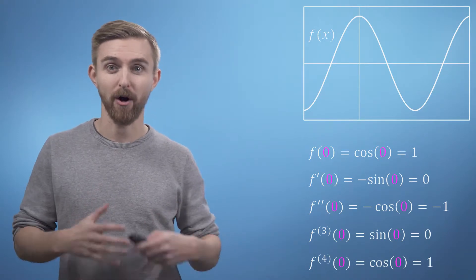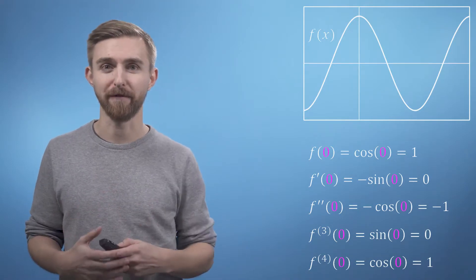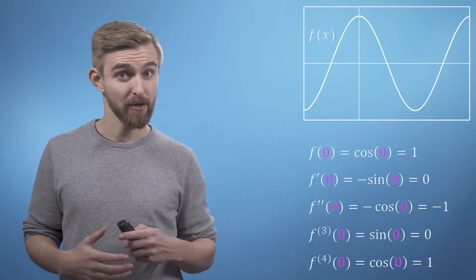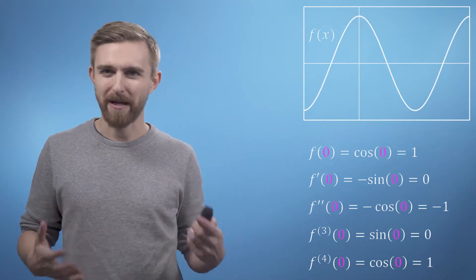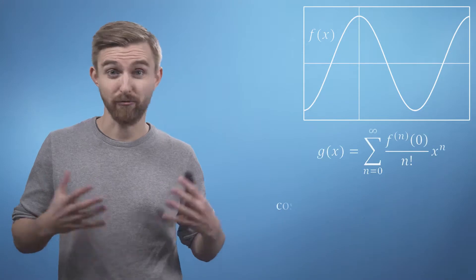The even powers of x are all what we call even functions which means that they are all symmetrical around the vertical axis just like cosine is. So we can now bring back our general expression for the Maclaurin series and just start writing out the terms.